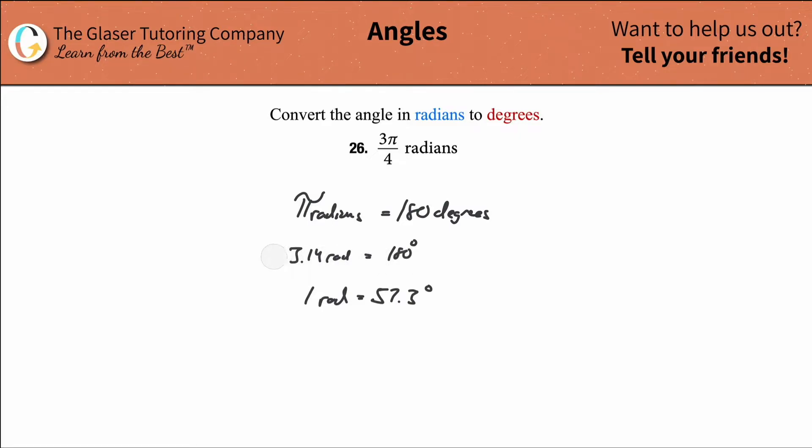So what we're going to do here is to do this conversion, I'm going to take the given value of 3 pi over 4 radians. Now, the unit here really belongs in the numerator with this fraction. What I want to then do is in order to do my conversion, I'm going to use this known relationship between radians and degrees.